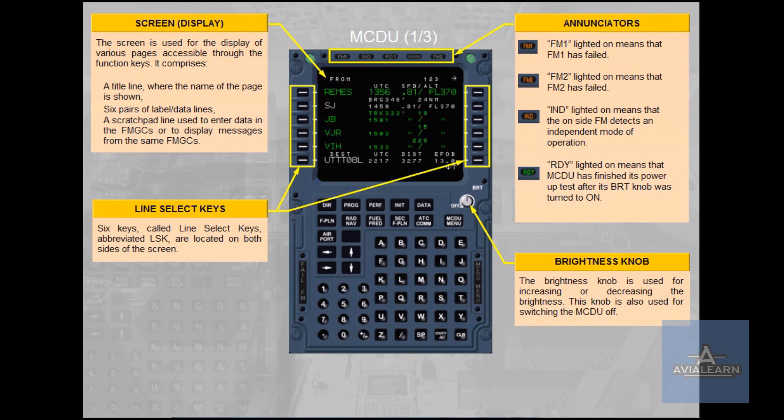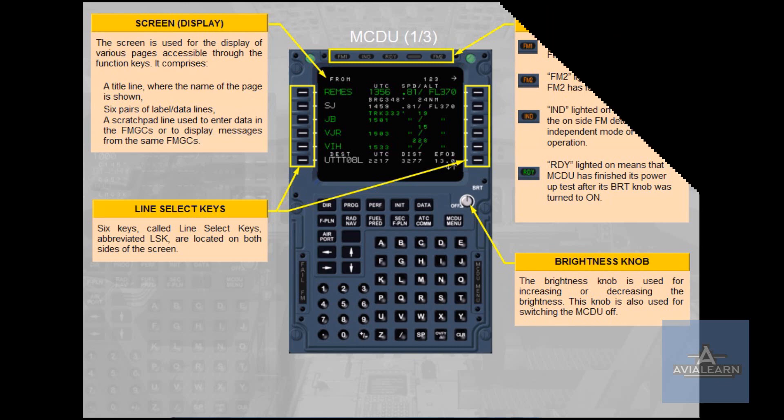The Annunciators: FM1 lighted on means that flight management and guidance computer number 1 (FMGC1) has failed. FM2 lighted on means that FMGC2 has failed. IND lighted on means that the FMGCs are operating in independent mode. RDY lighted on means that the MCDU has finished its power-up test after its brightness knob was turned on. The Brightness knob is used for increasing or decreasing the brightness and also for switching the MCDU off.